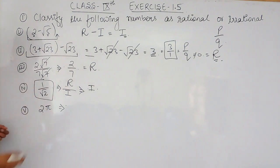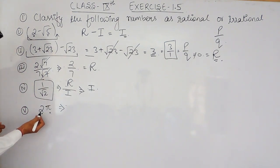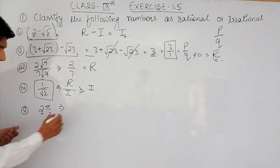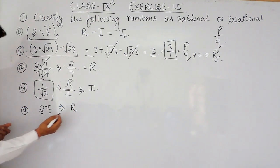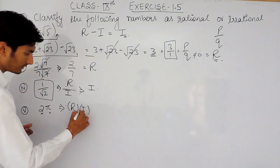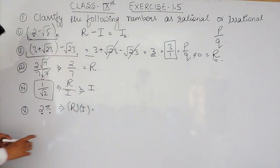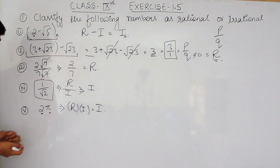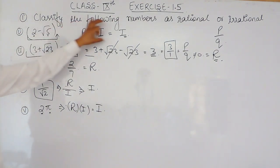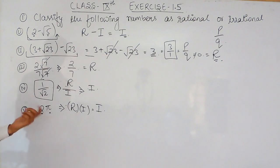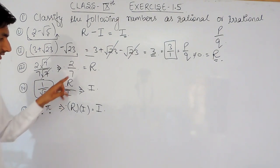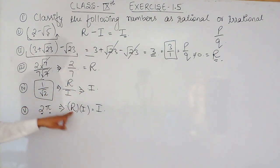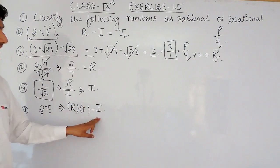For the fifth part, we have 2 multiplied by √2 multiplied by π. Here √2 is an irrational number and π is also an irrational number. There is another property: when a rational number is multiplied by an irrational number, the result is irrational. To summarize: adding or subtracting rational with irrational gives irrational; dividing rational by irrational gives irrational; and multiplying rational by irrational also gives irrational.